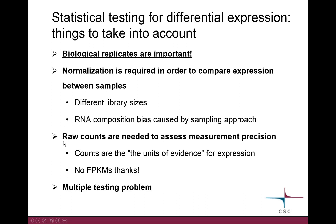An important thing to remember is that the numbers you feed to these statistical tests need to be raw counts — exactly the kind of counts you obtain from HTSeq, without modification. There are transformations like the FPKM transformation that you cannot use in this context. And since we are doing many tests because each gene is a separate test, we have a multiple testing problem that we need to correct for. These are the things I will be discussing.